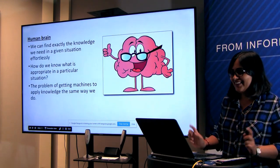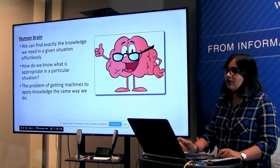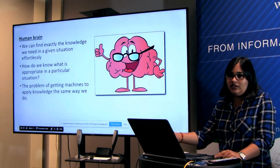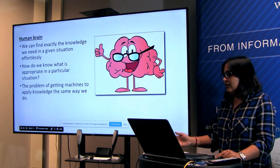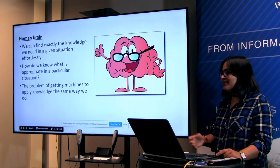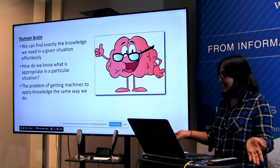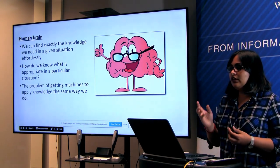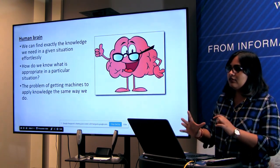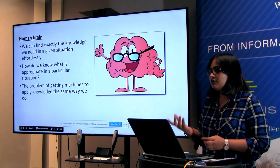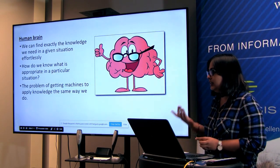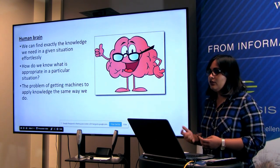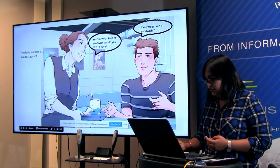This is our human brain. We can find exactly the knowledge we need in a given situation effortlessly. Suppose we are going to a restaurant — we know how to behave. Suppose I'm giving this presentation and I know I need to stand here and present. How do I know what is appropriate in a particular situation — what kind of questions to ask, what reactions to give? That can be easily interpreted through the human brain. But how does the computer do it?